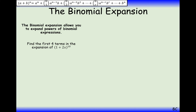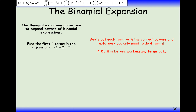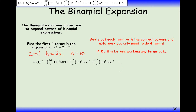In this question we're going to find the first four terms of (1 plus 2x) to the power of 10. Here a is 1, b is 2x, and n is 10. Starting with 1 to the power of 10, then 10 choose 1 decreasing the power on the 1 and increasing the power on the 2x, continuing for four terms. Then use your calculator to simplify.